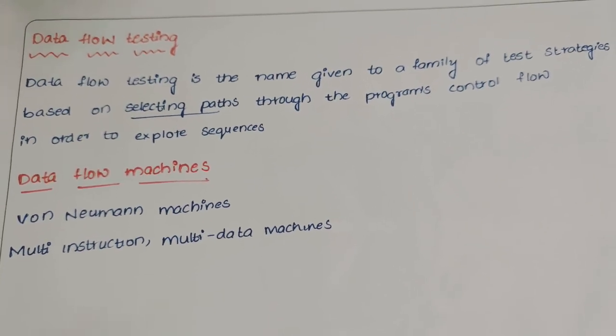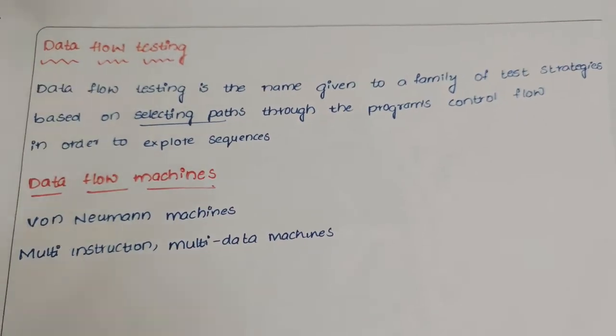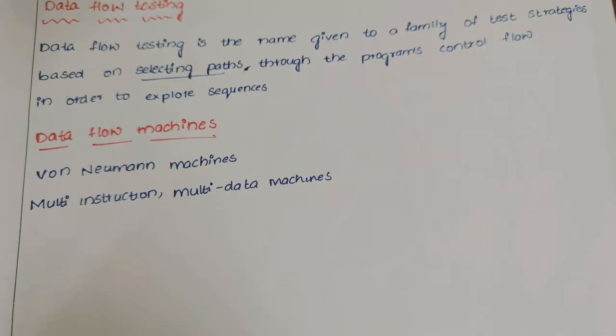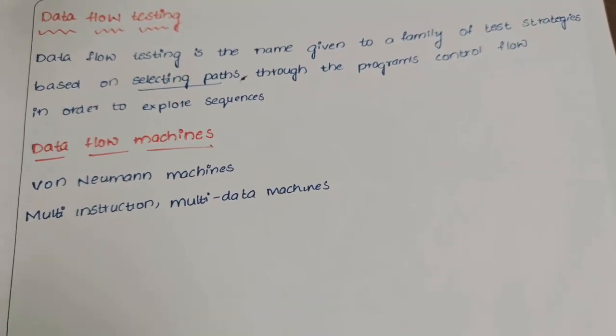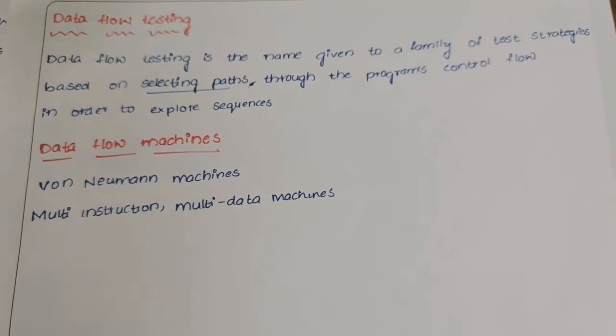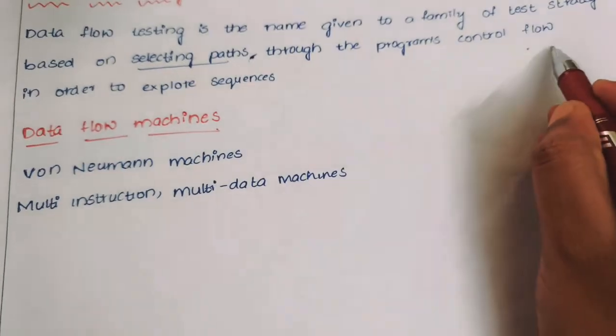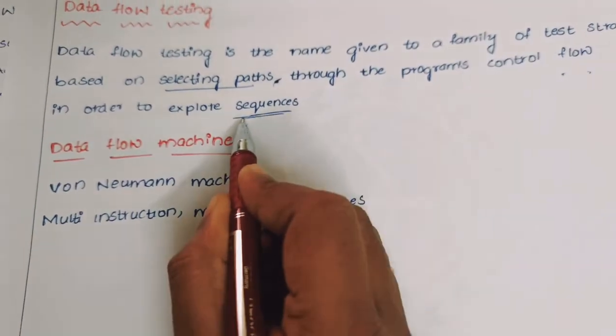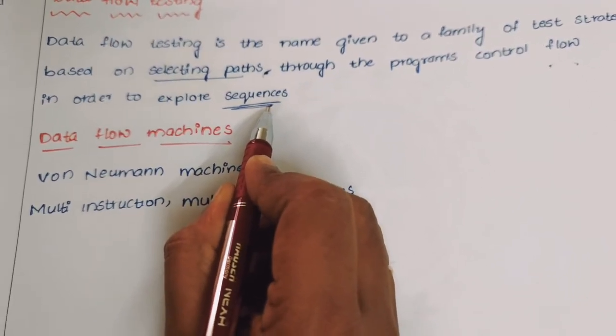Data flow testing is a name given to the family of test strategies based on selecting paths, which is nothing but defining some names to the paths through the program control flow in order to explore sequences in the sequence graph or control flow graph.